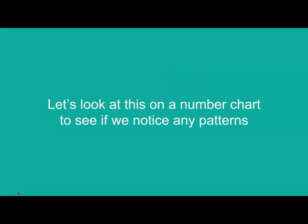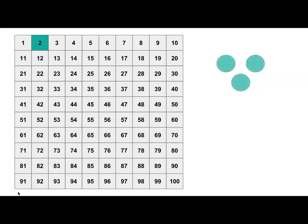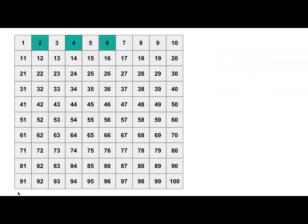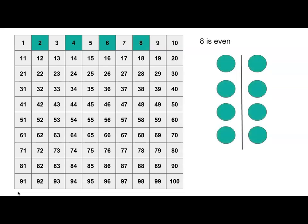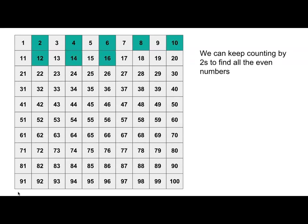Let's look at this on a number chart to see if we notice any patterns. So is two even? Yes, the number two is even. Is three even? No, the number three is odd. Is four even? Yes, the number four is even. We know five is odd and six is even. Seven is odd, eight is even. We can keep counting by twos to find out all the even numbers: ten, twelve, fourteen, sixteen and so on.